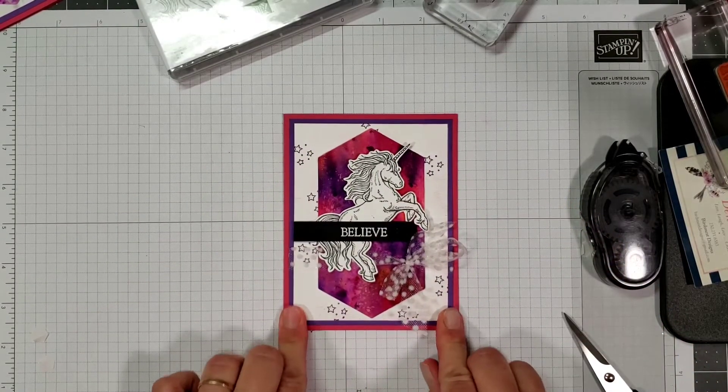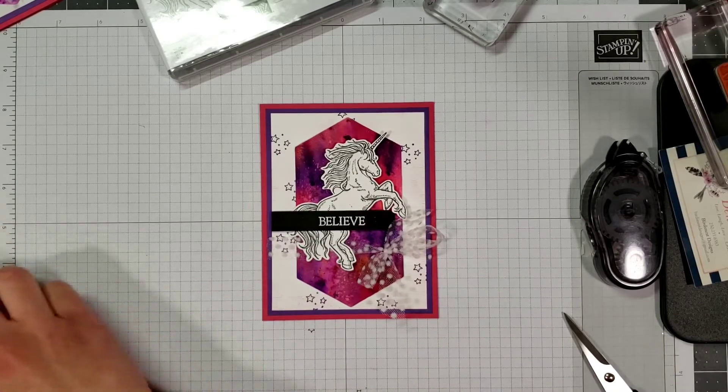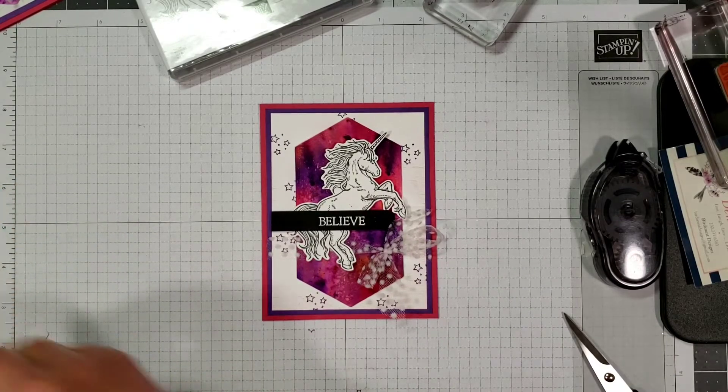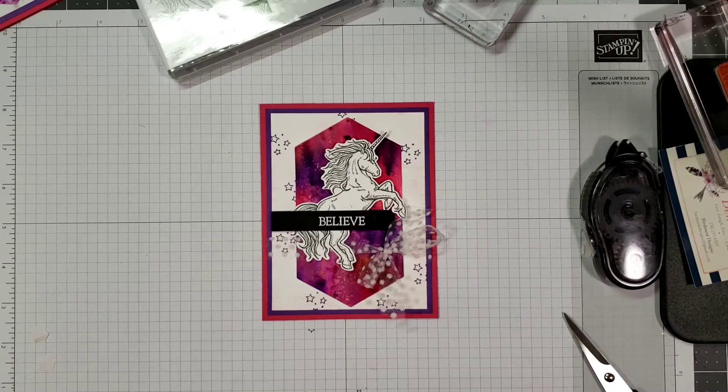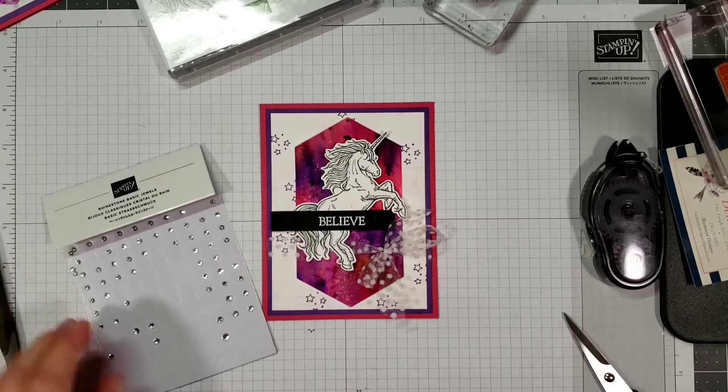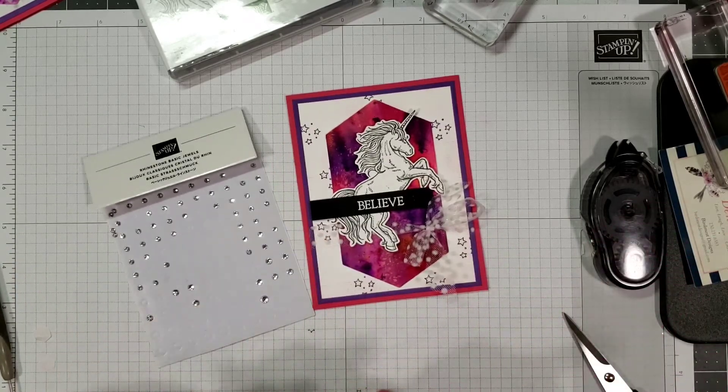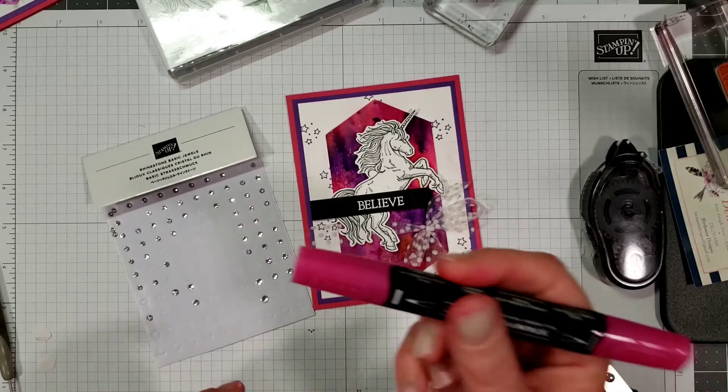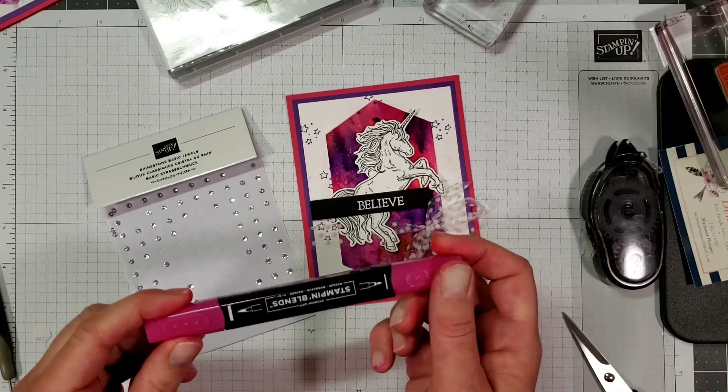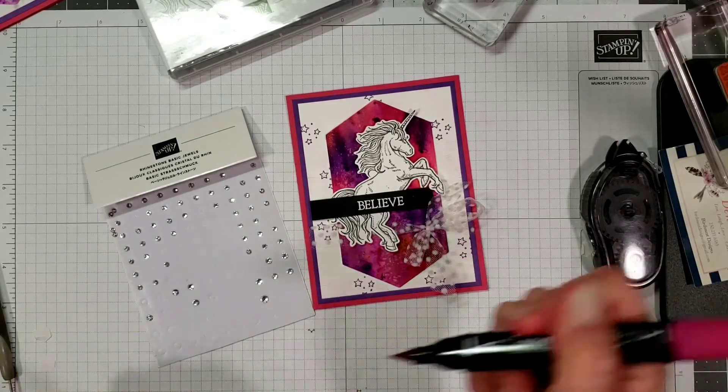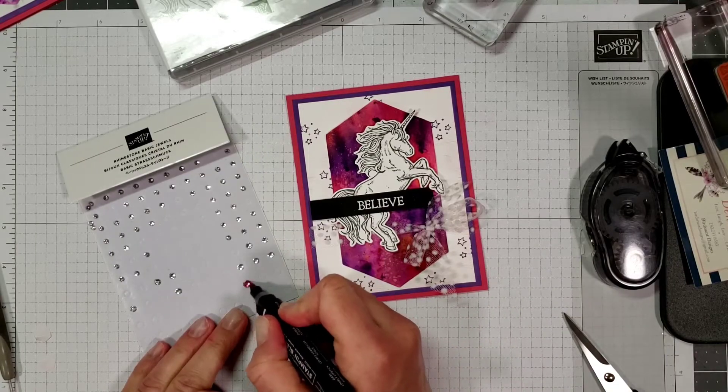Just like that. So the last thing that we need to do is add the bling. Of course anybody who's been to any of my classes in the past know that I love bling. So we're going to use rhinestones. I've got my lovely lipstick stampin blends and I'm going to color three of the rhinestones.